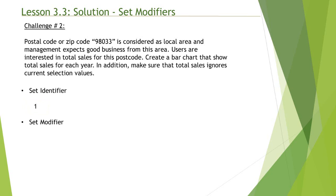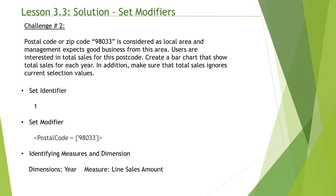For the set modifier, as the challenge states, sales must be for a particular zip code — in this case 98033. Within the angle brackets, on the left-hand side we have the field name postal code, and on the right-hand side within single quotes we have the hard-coded zip code value 98033. For dimensions and measures, year is the dimension and line sales amount is the measure since we're constructing a bar chart for each year. We'll add several filters so users can make selections, but since the set identifier is one, those selections will be ignored within this expression — meaning values in the chart will not change even if the user makes selections in any of the filters.